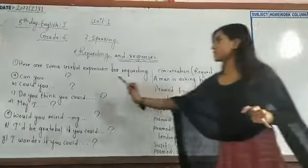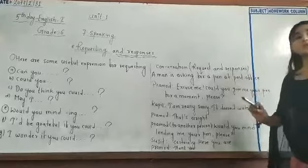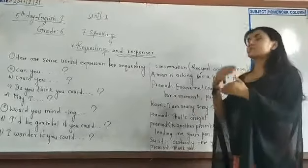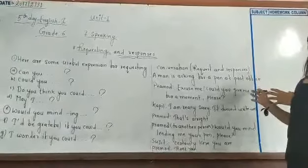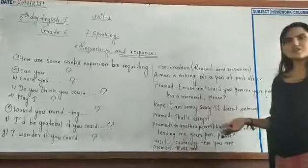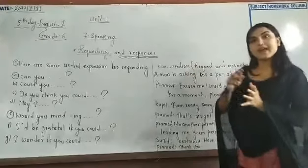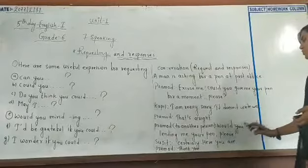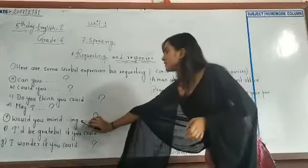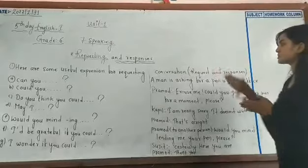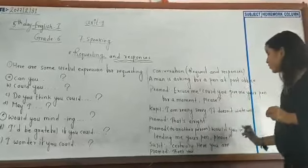He used the expression 'could you' — 'Excuse me, could you give me your pen for a moment, please?' The other person's response is: 'I am really sorry, it doesn't write well.' The reply from the requester is: 'That's alright, no problem.' Then he asks again with another expression: 'Would you mind lending me your pen, please?' So in this conversation, two expressions were used: first 'could you give,' and second 'would you mind lending.'